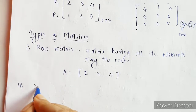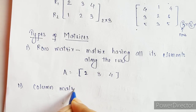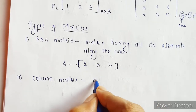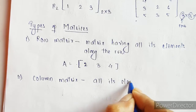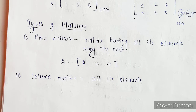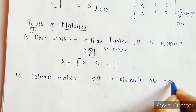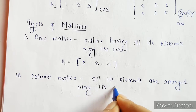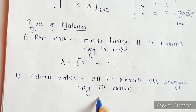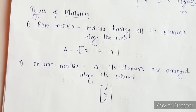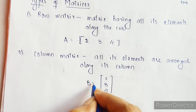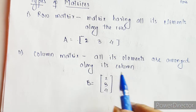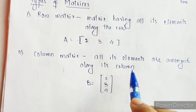Next is column matrix. In a column matrix, all its elements are arranged along its column. For example, in matrix B, we have only one column. All the elements are arranged along that one column, so it is called a column matrix. In contrast, when elements are along one row, it is called a row matrix.